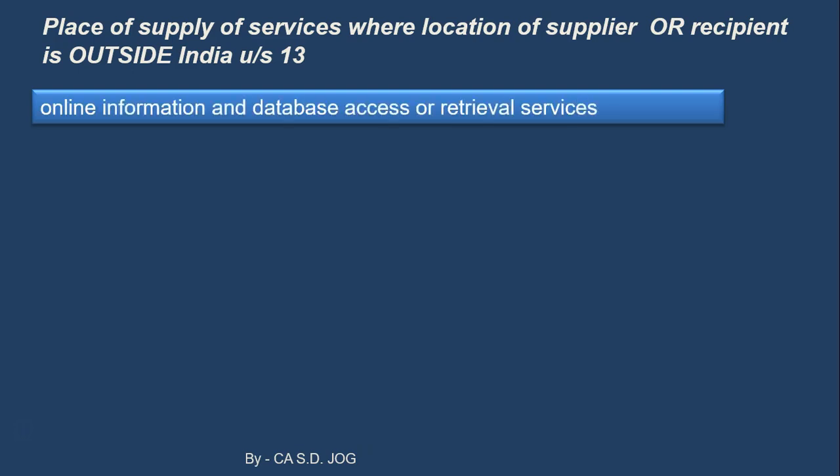Finally, there is one category called Online Information and Database Access or Retrieval Services (OIDAR). We are going to discuss this special category of services in a separate chapter altogether.